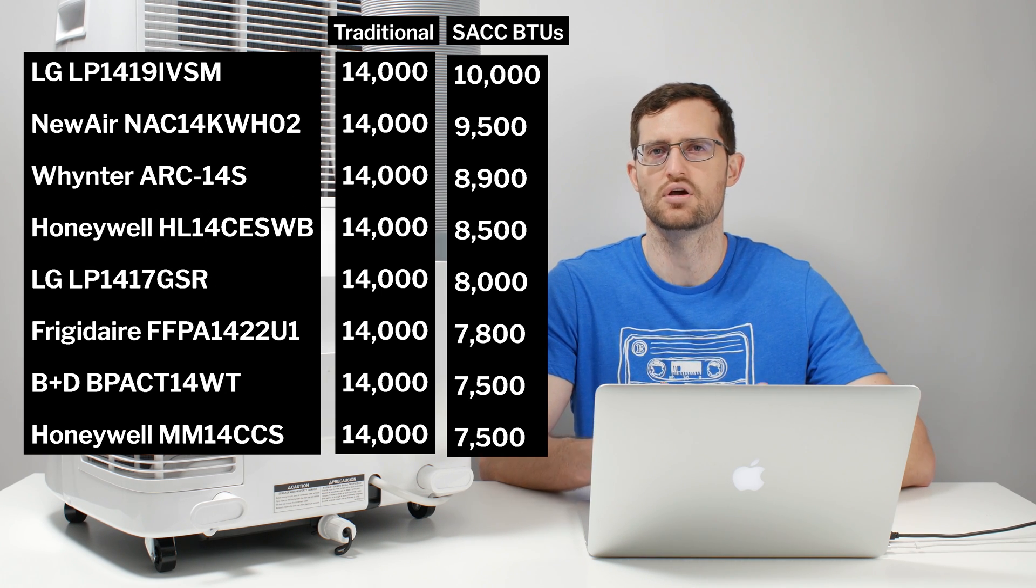Now earlier we talked about that whole infiltration air problem that single hose units create because they are exhausting air that they're not actively working to replace. Dual hose units don't have the same problem to the same extent because they are not using room air to cool the condenser. They are actually pulling in outdoor air to cool the condenser and in doing so they limit the pressure gradient that is created.